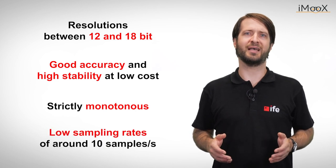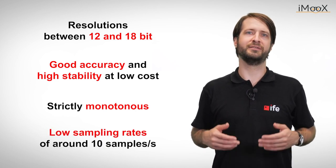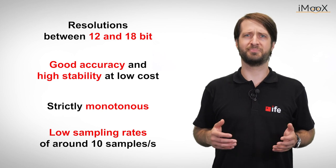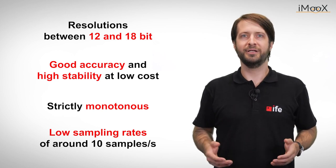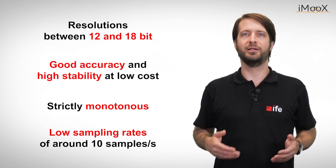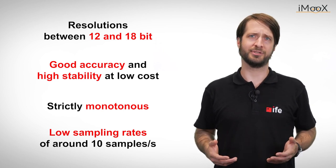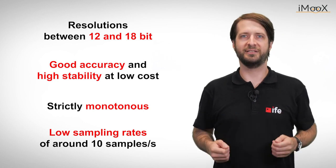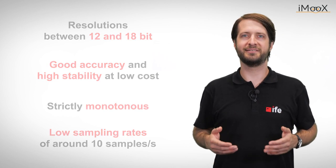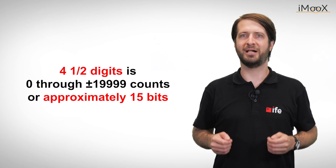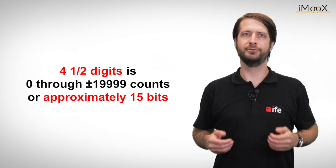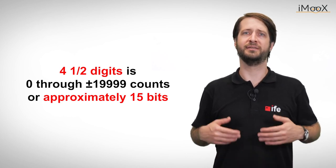Unfortunately, the sampling rates are very low, often in the ranges of about 10 samples per second. However, there are applications where low sampling rates are not a problem, such as temperature measurement applications. This type of ADC is also used extensively in precision digital multimeters, where their high resolution is often measured in displayed digits.